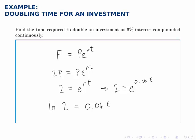By using a logarithm I've extracted the exponent from the right side and written it in a way that I can solve. So now to solve for t I just divide the natural log of 2 by 0.06.